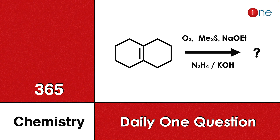Welcome to One Chemistry. This is the 365 Chemistry Series — daily one question for you. Here you have a decalin system which is an alkene. You are using ozonolysis and base. Next, you are using hydrazine and base. You have to guess what will be the final product.